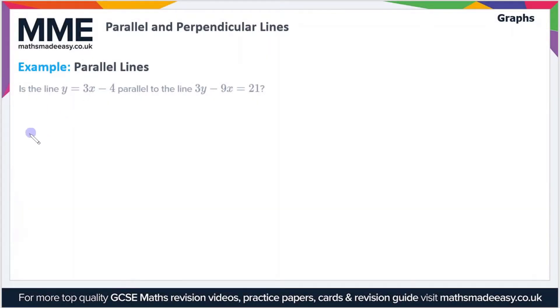Let's have a look at some example questions. The first one is: is the line y equals 3x minus 4 parallel to the line 3y minus 9x equals 21? Well, if the lines are parallel, then they have the same gradient. Do these lines have the same gradient? They're not in the same form first of all. This one's in the form y equals mx plus c, which is nice, but the one on the right we don't have in the same form, so let's rearrange it.